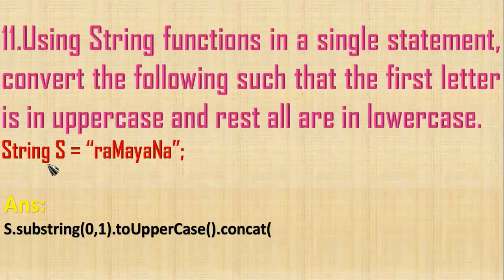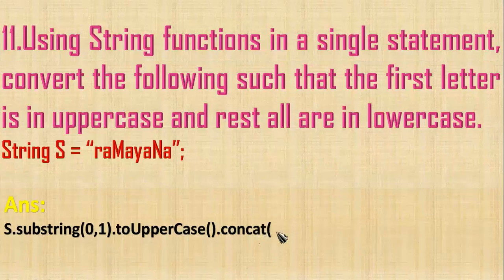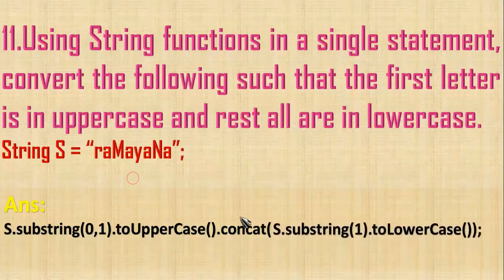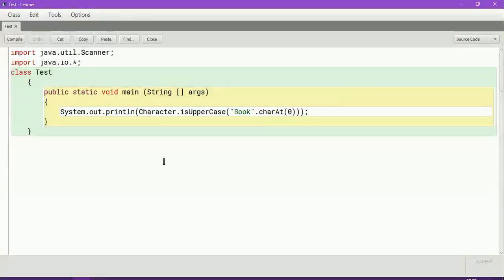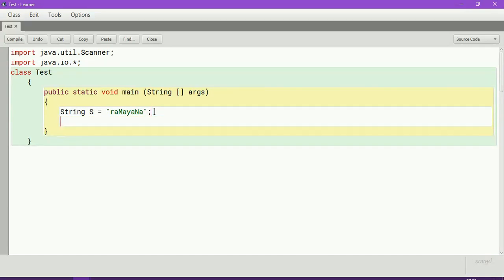Then we have to combine that one and all other lowercase letters. So we will give dot concat. We can give s dot substring of 1 — from starting index 1 the rest will all be taken — dot toLowerCase. We terminate. Then I will delete this code and paste that one and also the answer line.